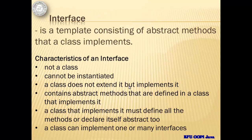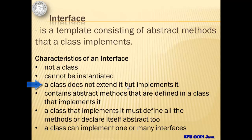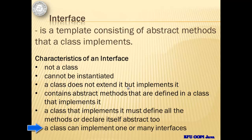Interface is a template consisting of abstract methods that a class implements. Some of the characteristics of an interface are: it is not a class, it cannot be instantiated, a class does not extend it but implements it. It contains abstract methods that are defined in a class that implements it. A class that implements it must define all the methods or declare itself abstract too. And lastly, a class can implement one or many interfaces.